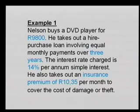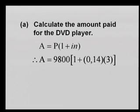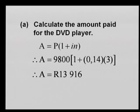The first question: calculate the amount paid for the DVD player. Using the simple interest formula, P = R9,800, interest rate = 14% converted to decimal 0.14, and number of years = 3. After substitution, the total amount including interest comes to R13,916.